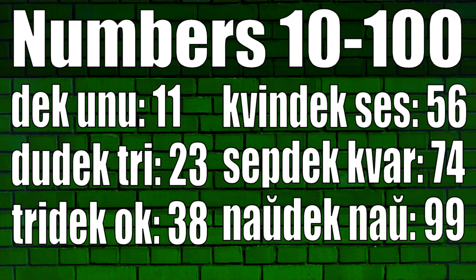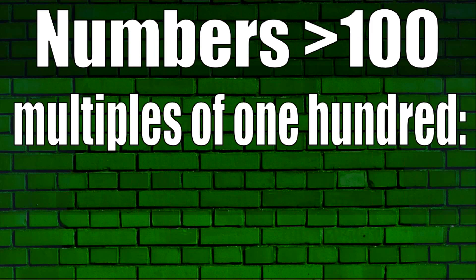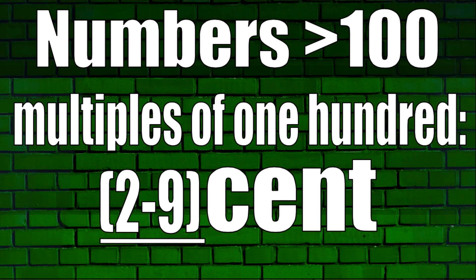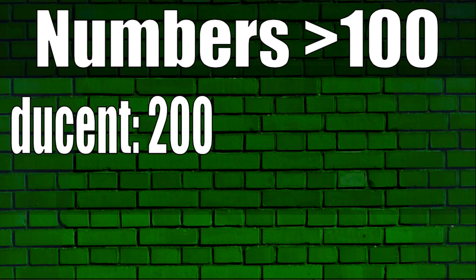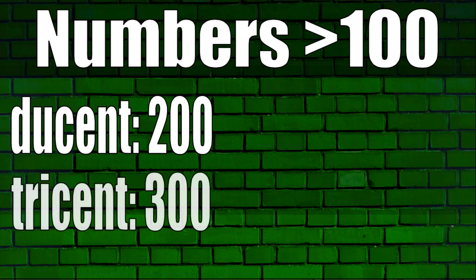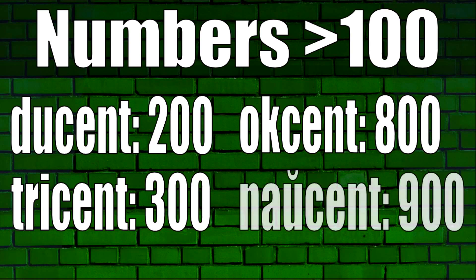The word for 100 is cent. Multiples of 100 work just like multiples of 10 in Esperanto — you say the number 2 through 9, the number of hundreds, plus cent, with no space in between. Some examples: ducent 200, tricent 300, all the way up to okcent 800, and naucent 900.